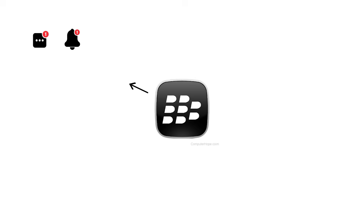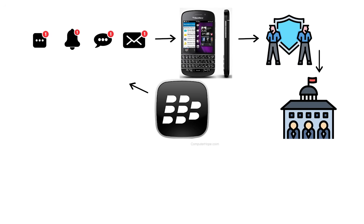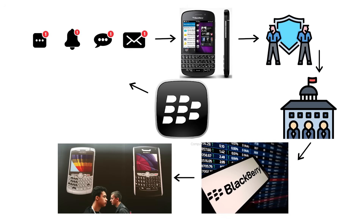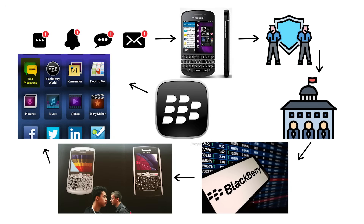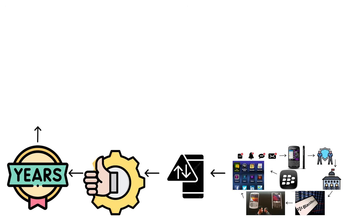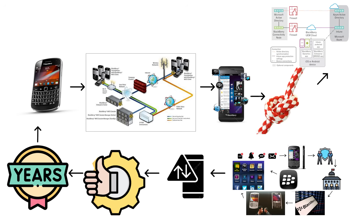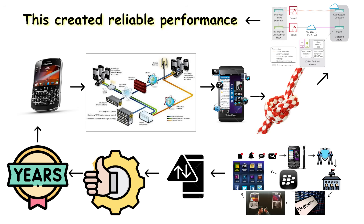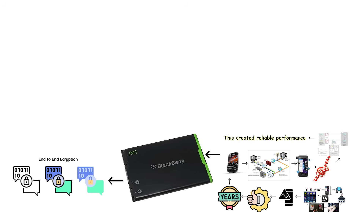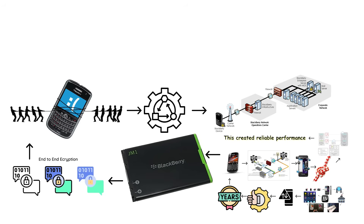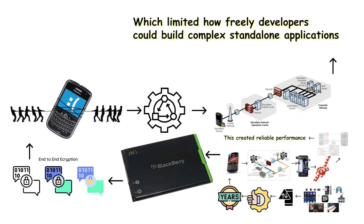BlackBerry OS began as the gold standard for mobile communication. Its push email system, physical keyboard design, and strong security features made it the default choice for governments, corporations, and anyone who wanted to look extremely busy while typing rapidly with their thumbs. The operating system excelled at messaging efficiency, low data usage, and network reliability. For years, it defined what a smartphone was supposed to be. The architecture of BlackBerry OS was optimized for narrowband mobile networks. Applications were lightweight, tightly controlled, and often relied on BlackBerry's own backend infrastructure. This created reliable performance, excellent battery life, and end-to-end encryption that appealed to high-security industries. It also created a dependency: the system's intelligence lived partly on the device and partly on BlackBerry's servers, which limited how freely developers could build complex standalone applications.